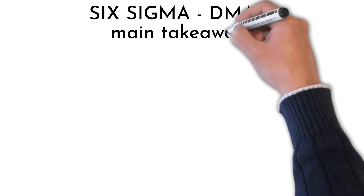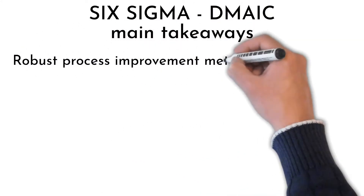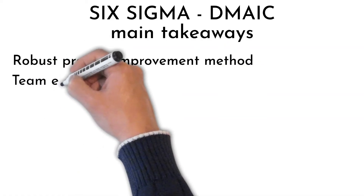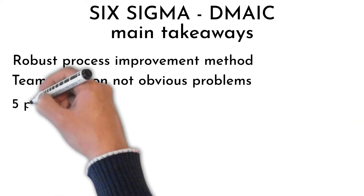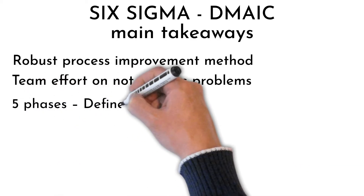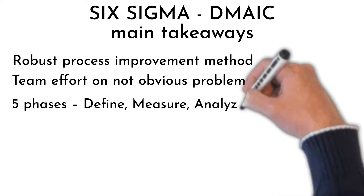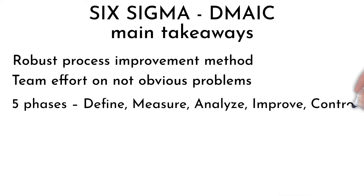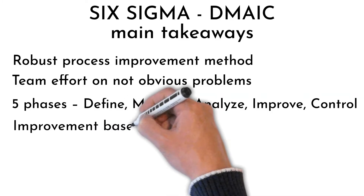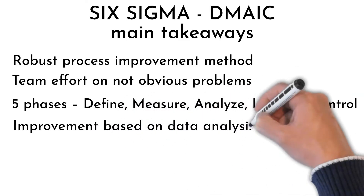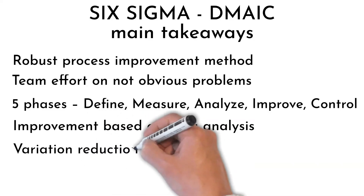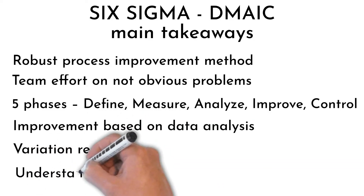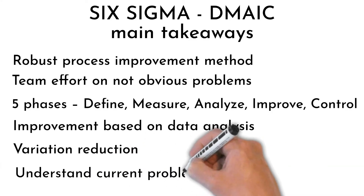Key takeaways about Six Sigma DMAIC: it is a robust process improvement method and a team effort focused on resolving not-obvious problem causes. It has five phases — Define, Measure, Analyze, Improve, and Control. Improvement targeted based on data analysis reduces variation in processes, improving repeatability. The approach emphasizes first understanding current problems and pain points before enabling improvement changes.